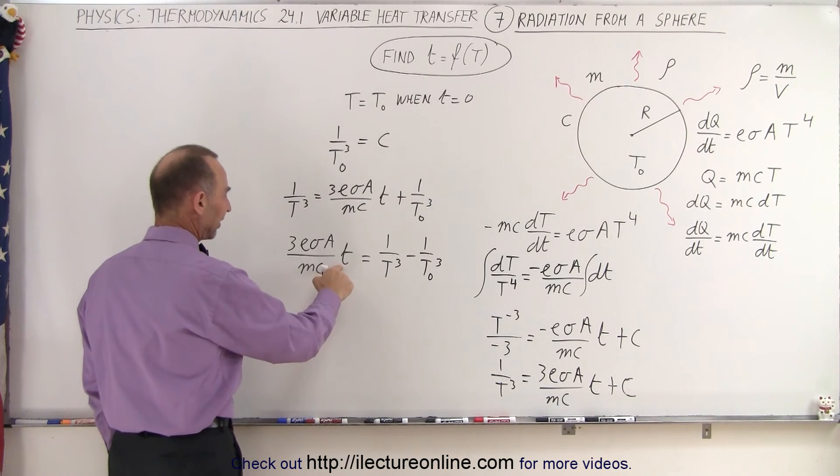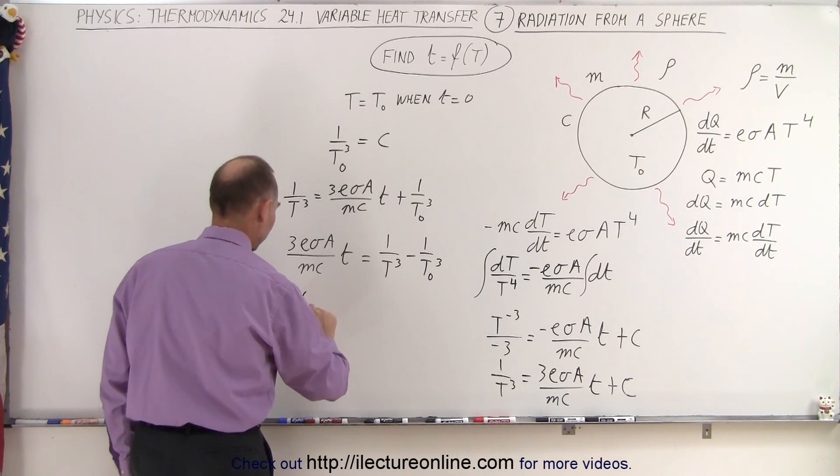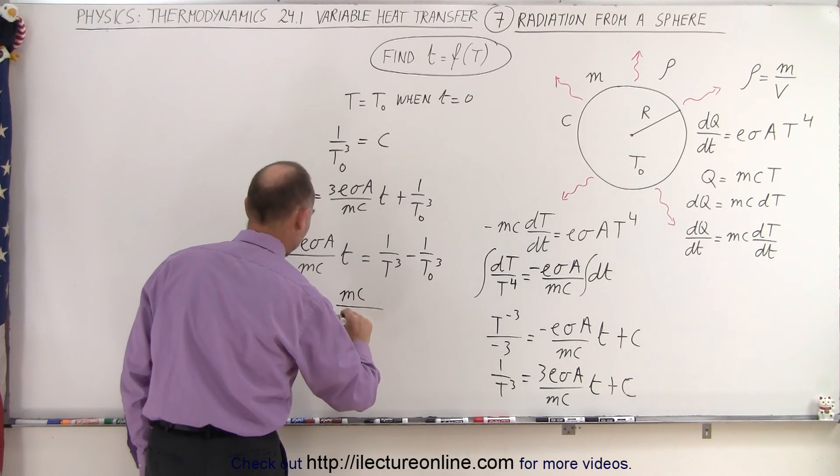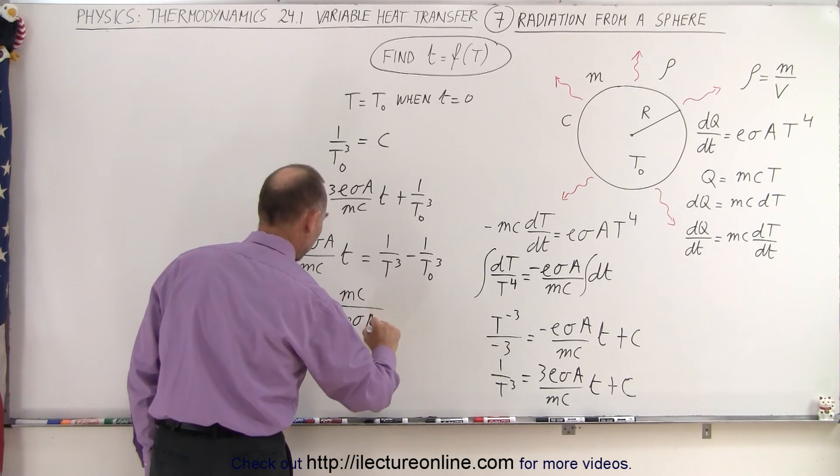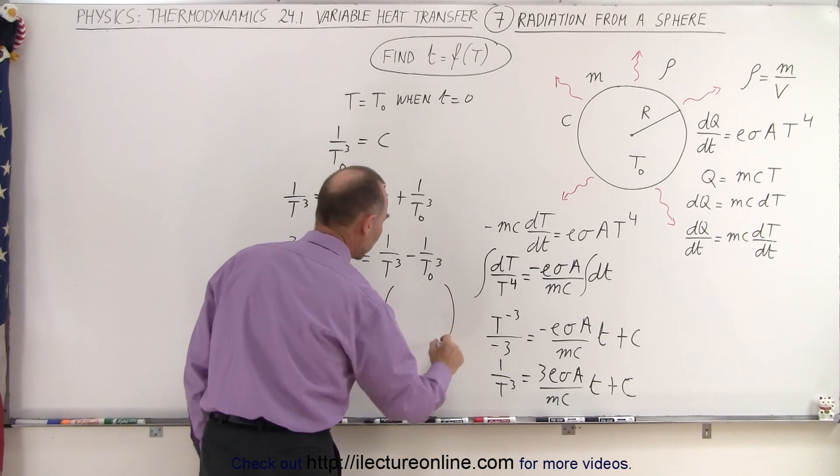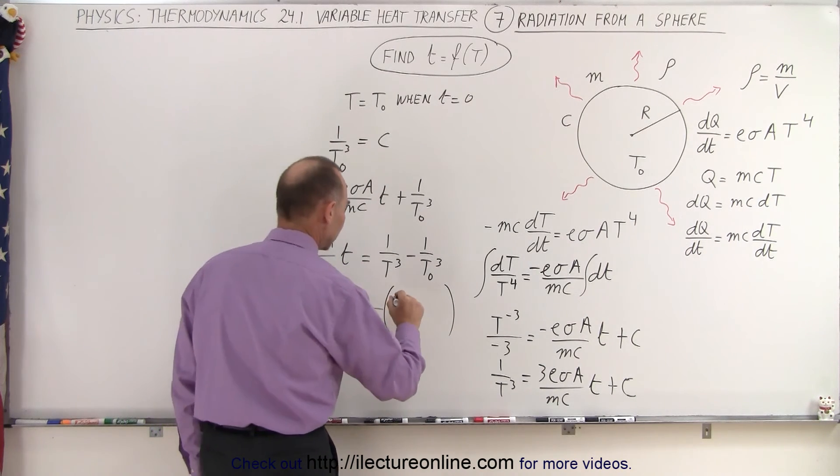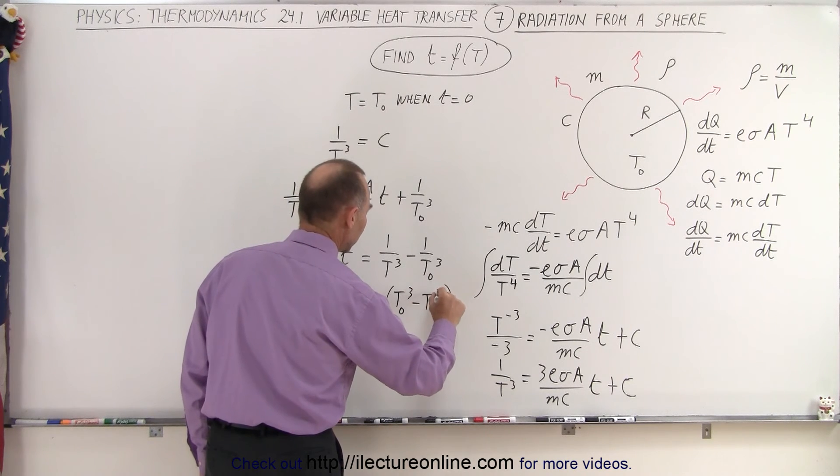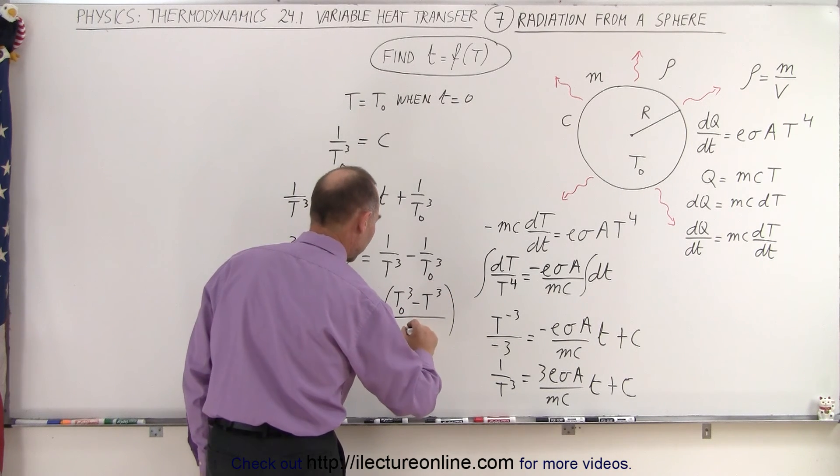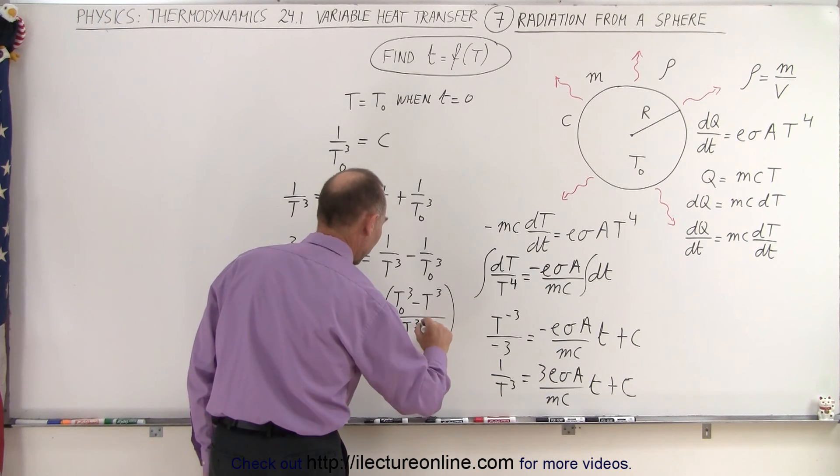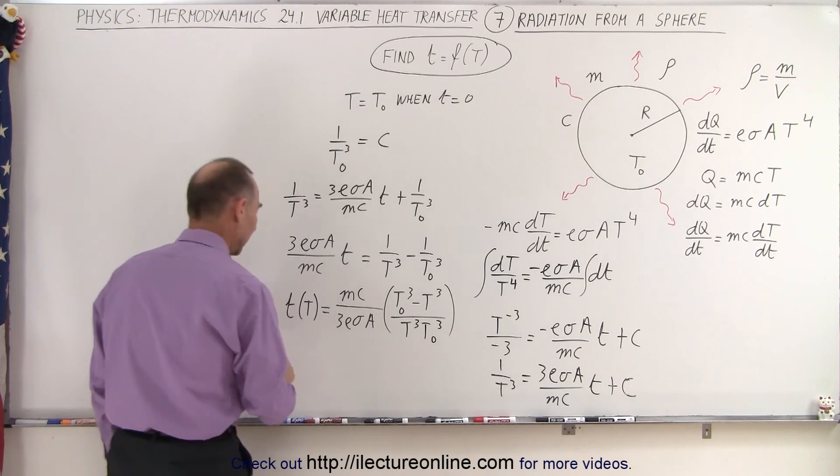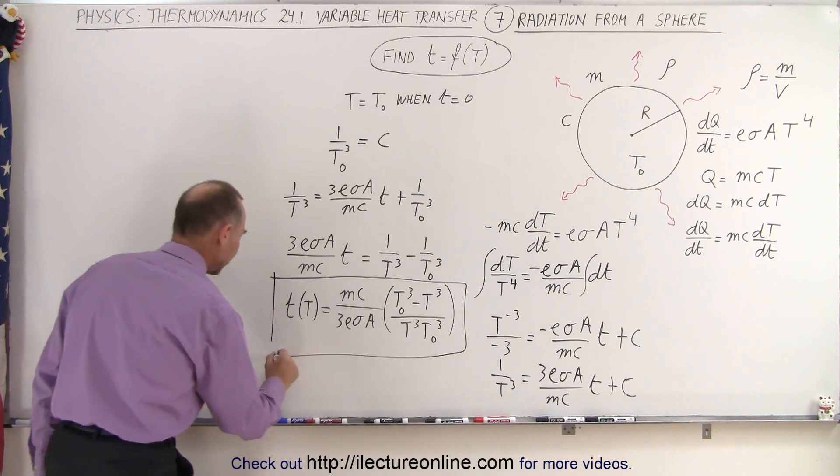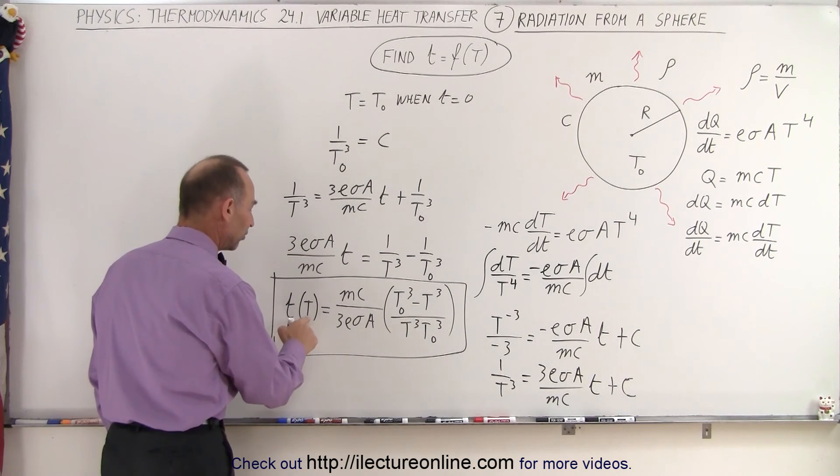Now we're going to isolate the T. So T as a function of the temperature is equal to MC divided by three E sigma A. And then over here what we can do is write this over a common denominator. So this becomes T initial cubed minus T cubed divided by the product of T cubed times T initial cubed. And here we have our equation that tells us what the time will be to reach a certain temperature.